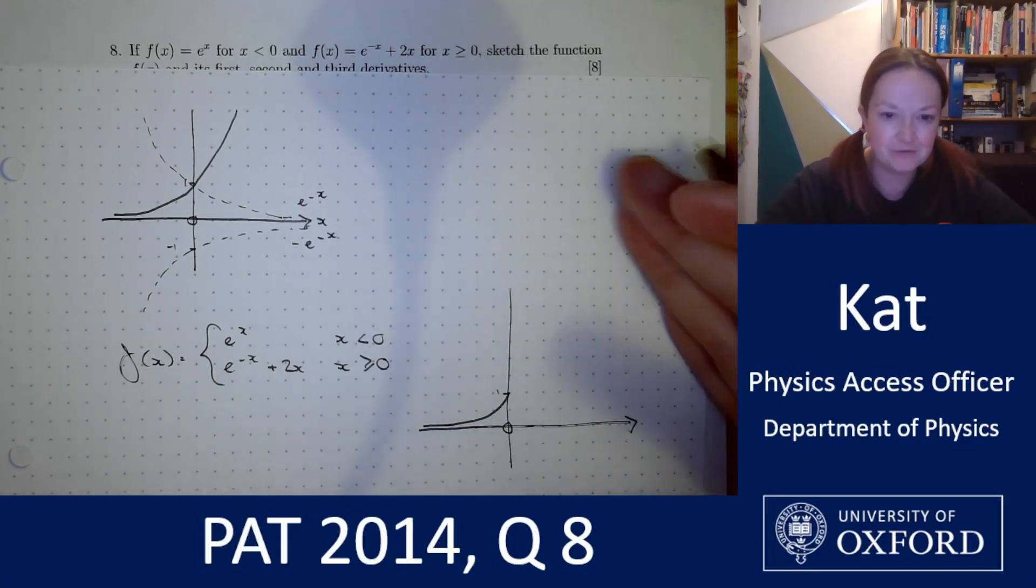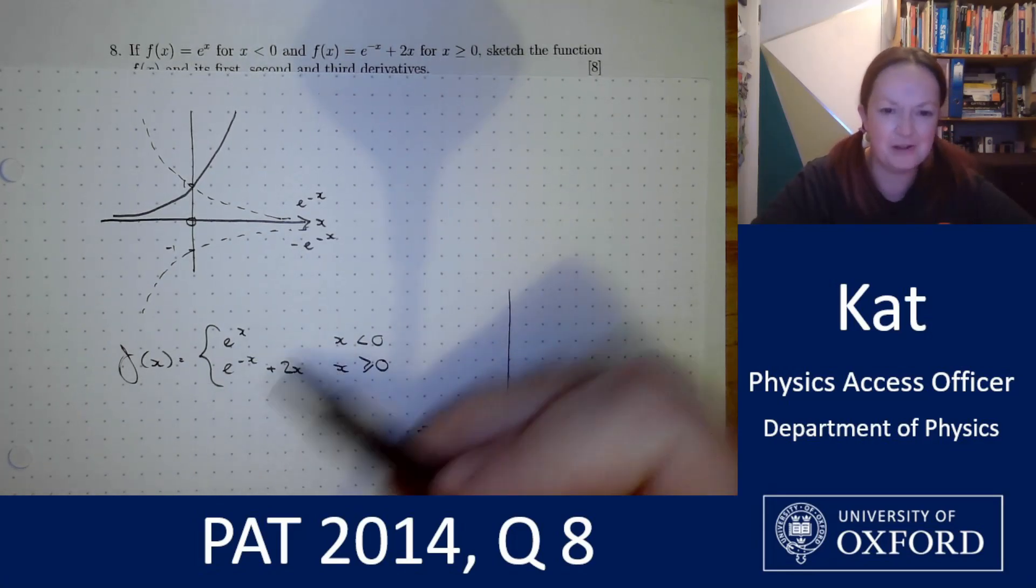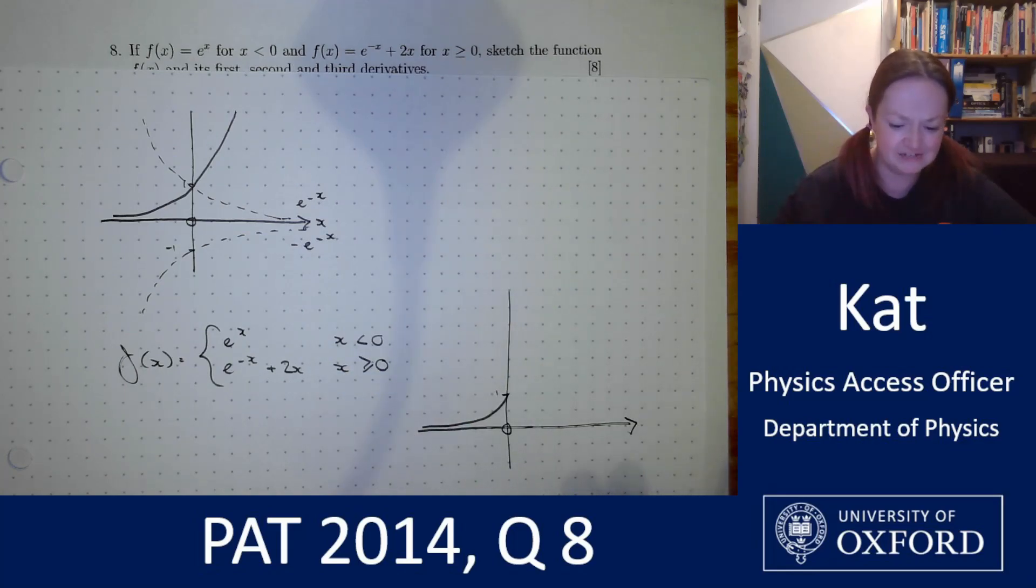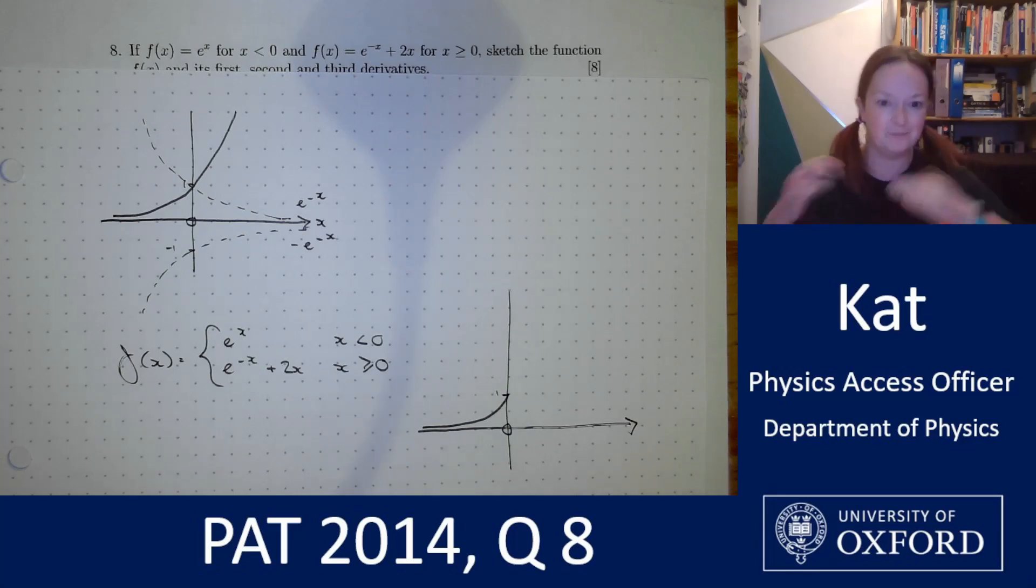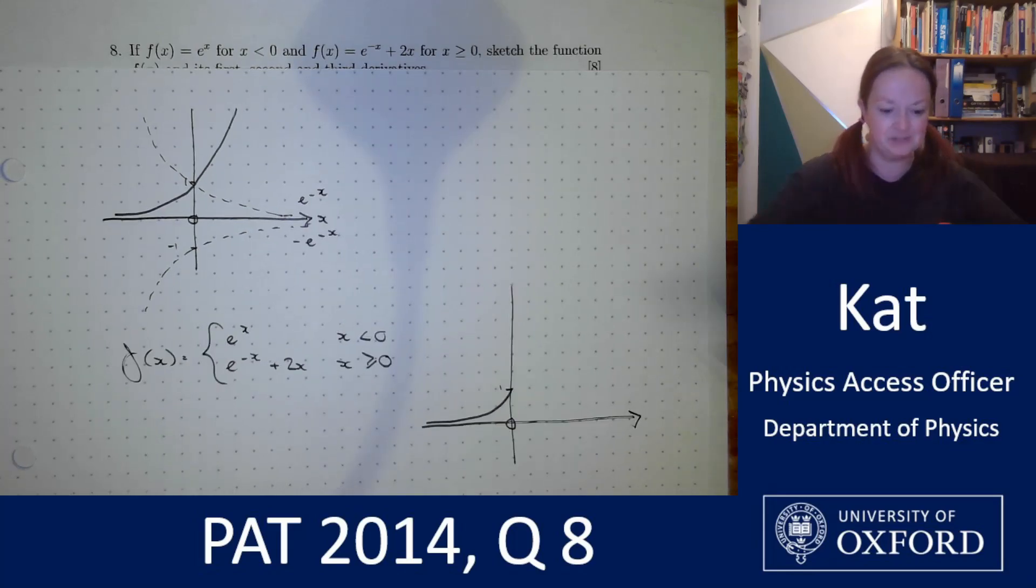For x is greater than or equal to zero this is quite a tricky one and I find it easier to think about this as not e to the negative x plus 2x but as 2x plus e to the negative x. Let me explain why that makes more sense to me. I'm going to come back up next to my example of the sketches.